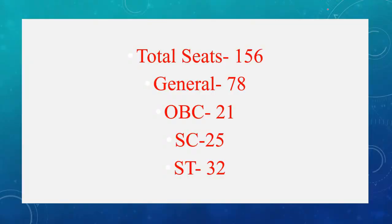First of all, let's talk about the seats. The total seats are 156. When the first notification came, it was 123, then it was revised. The next notification increased the seats to 156. Category-wise: General is 78, OBC (Other Backward Classes) is 21, Scheduled Caste is 25, and Scheduled Tribes is 32 seats.